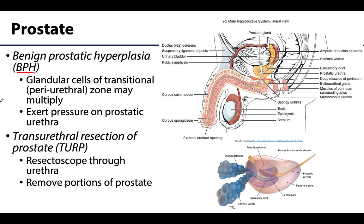Another clinical procedure worth mentioning is the transurethral resection of the prostate, often shortened to TURP. In this procedure a resectoscope is inserted through the external urethral meatus and traverses through the spongy urethra to reach the prostatic urethra. This allows access to the prostate so that portions can be removed, which may be done in cases of severe BPH that is blocking sufficient urine flow or causing other BPH symptoms.